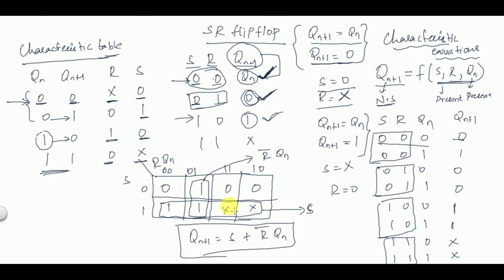I will cover K-maps in detail in upcoming lectures. This is how we derive the characteristic table and characteristic equation from the truth table. If you can remember the truth table, you can derive both the characteristic table and characteristic equation easily.